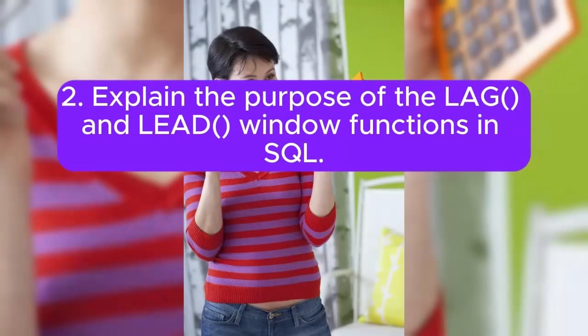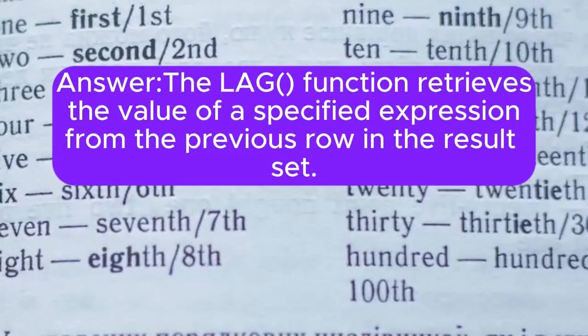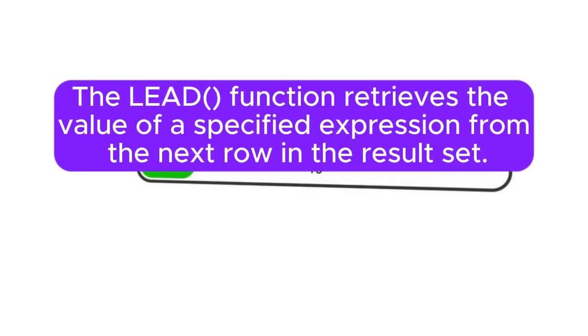Question 2: Explain the purpose of the lag and lead window functions in SQL. Answer: The lag function retrieves the value of a specified expression from the previous row in the result set. The lead function retrieves the value of a specified expression from the next row in the result set.